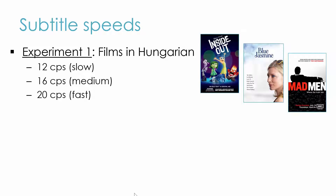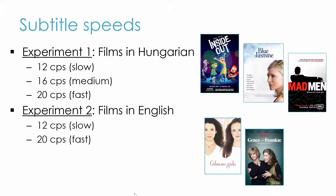We conducted two experiments: one with clips with the soundtrack in Hungarian and the other in English. We showed people subtitles at different speeds — slow subtitles at 12 characters per second, medium-paced at 16 characters per second, and fast at 20 characters per second. And we tested their comprehension, cognitive load, enjoyment, reading experience, and other things. We also monitored their eye movements.